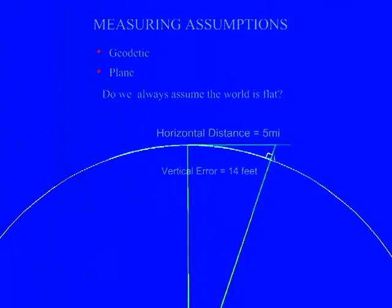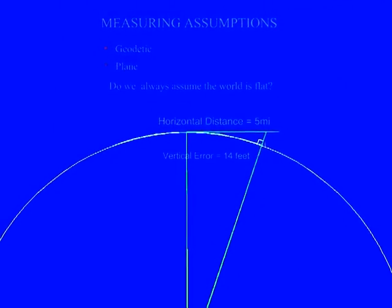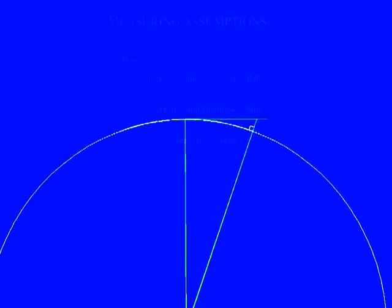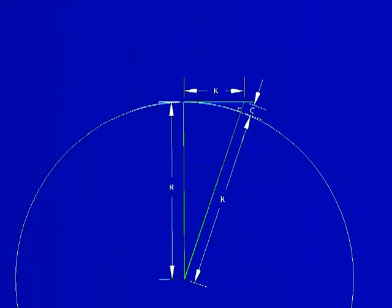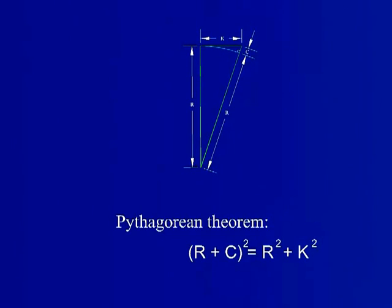Surveying equipment measures distance along a line of sight. The error in the height or elevation at the target location due to curvature can be calculated. Using Pythagorean theorem, we can relate the curvature error, c, to the radius of the Earth, r, and the horizontal distance, k.